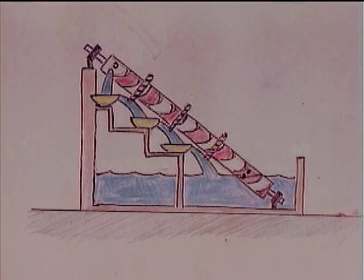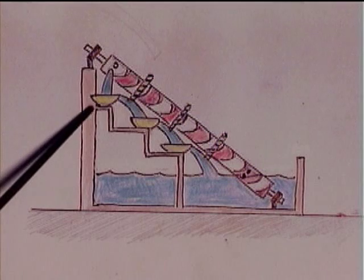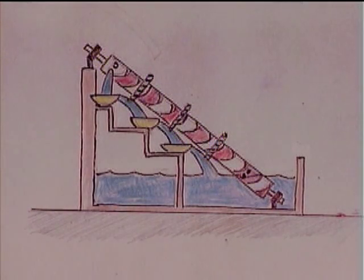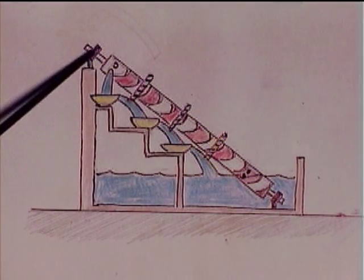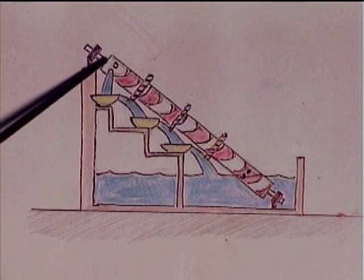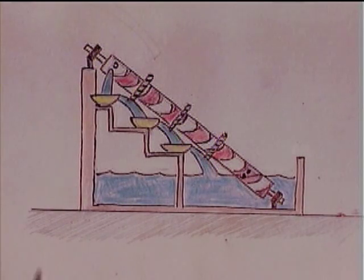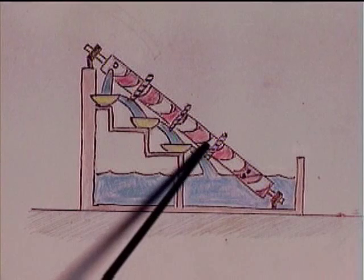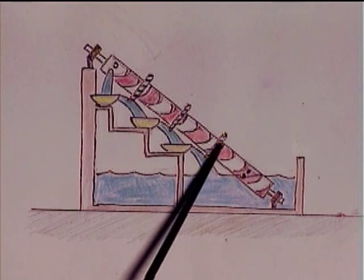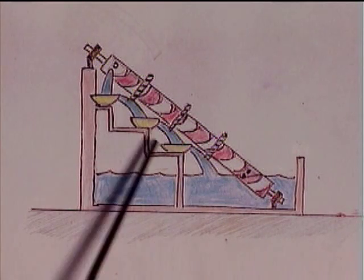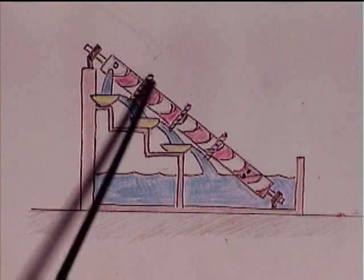That means its power comes from the height alone that the water falls from. The water power falling in this stepped manner is the same as the water power falling straight down. This device would work just as well if only the bottom water wheel existed, and these two water wheels were eliminated.